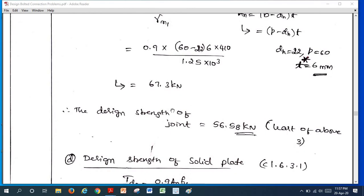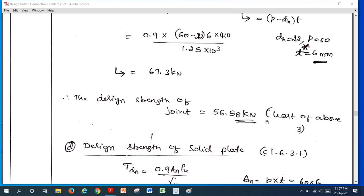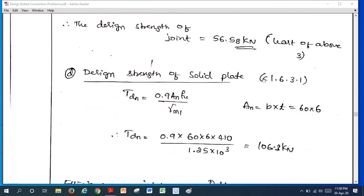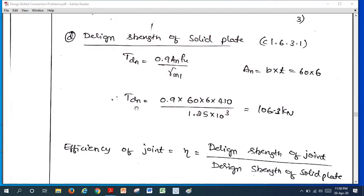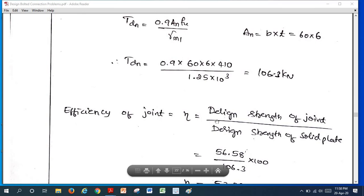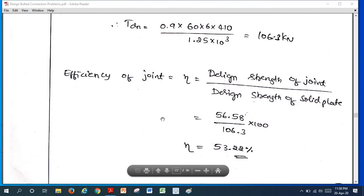Therefore, the design strength of the joint is least of all three. That is 56.58 kN. If we calculate design strength of solid plate according to the same formula, A becomes P into t. Where P is pitch 60, t is thickness of main plate, that is 6 mm. Therefore, it comes out to be 106.3 kN. If we calculate efficiency of the joint, that is equal to design strength of joint to the design strength of the solid plate. It comes out to be 53.22 percent is the efficiency of the joint. We should take care while taking thickness in VDBP formula. And in case of butt joint, we should analyze just half portion of the joint, not the full portion. Thank you.